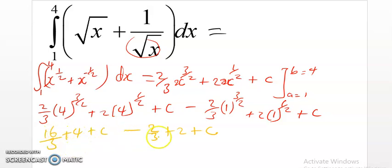If we bring this together, we have 28 over 3 plus c, and this will be minus 8 over 3.